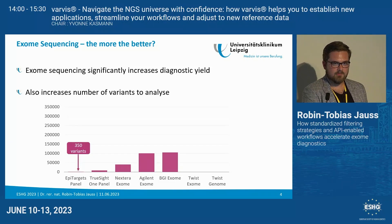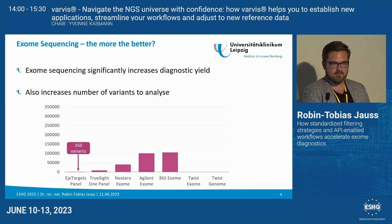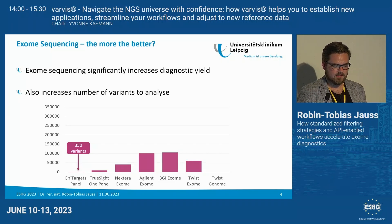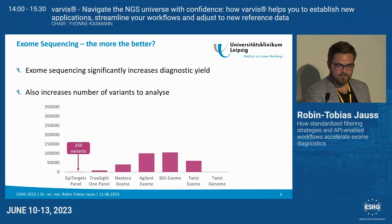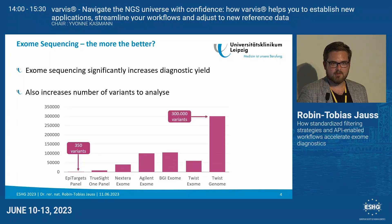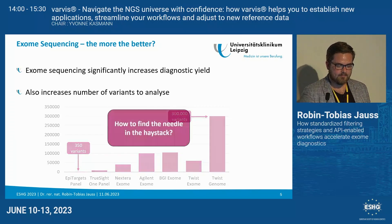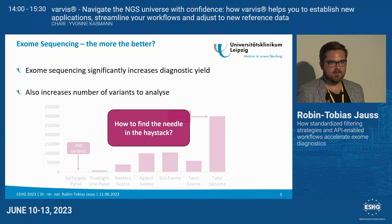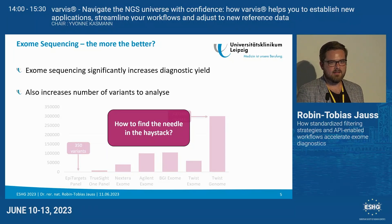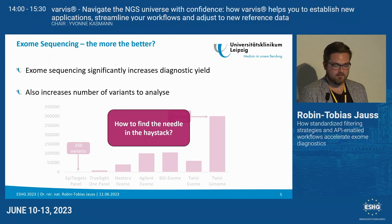Interestingly, when we switch to more comprehensive exome kits and as sequencing technologies improve, this number drops again. But still, 60,000 variants per case is quite a lot. Things get even worse when we talk about genomes, but that's not part of the talk today. With this many variants, the question arises: how do we find this metaphorical needle in the haystack? How do we find the variant causative for the phenotype of our patient?